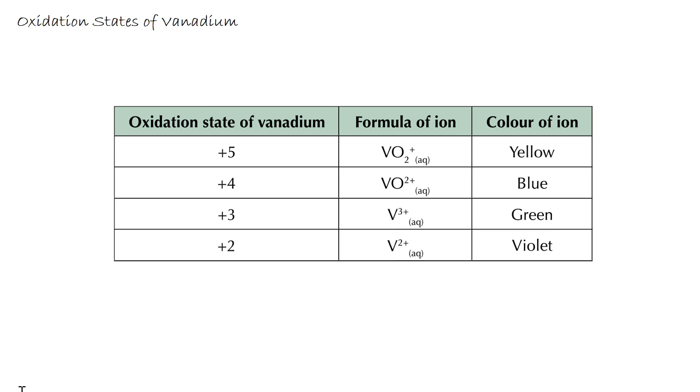In the new AQA A-Level course they're quite specific about you knowing the oxidation states of vanadium. Many transition metals have variable oxidation states, but vanadium is quite interesting because it holds four common stable oxidation states: plus five, plus four, plus three, and plus two. They all have different colours of ions and we'll see where this colour comes from in a future lecture.